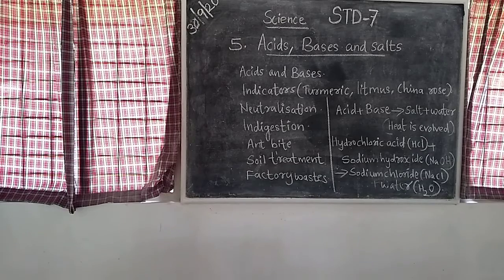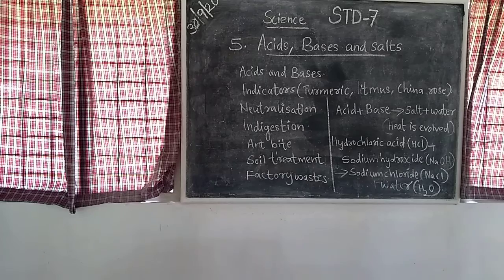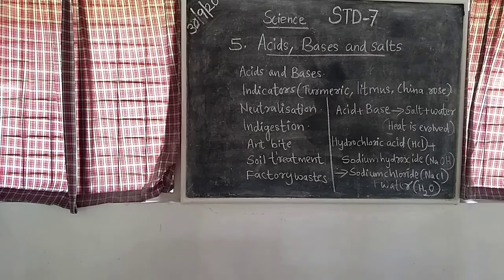Next is indicators. What are indicators? Substances that are used to test whether a substance is acidic or basic are known as indicators.